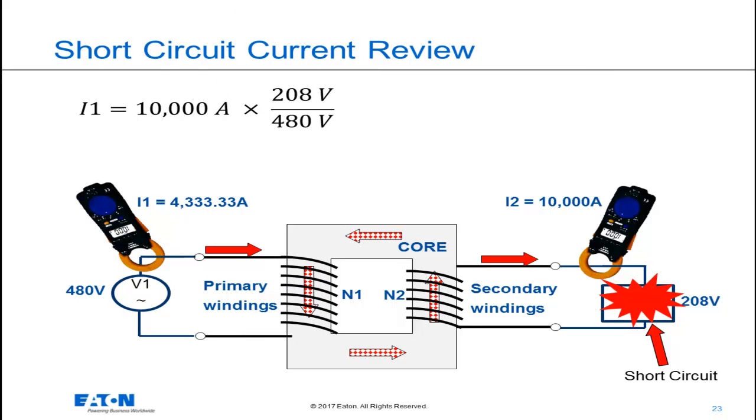So let's do an example to help us understand this. For this 480 volt to 208 volt transformer, should a fault occur on the secondary and measured by a meter to be 10,000 amps, an ammeter if placed in the primary would read 4,333 amps. That's calculated in the equation at the top of this slide. Thanks to the turns ratio of the transformer, the current on the primary is reduced because it's at a higher voltage.